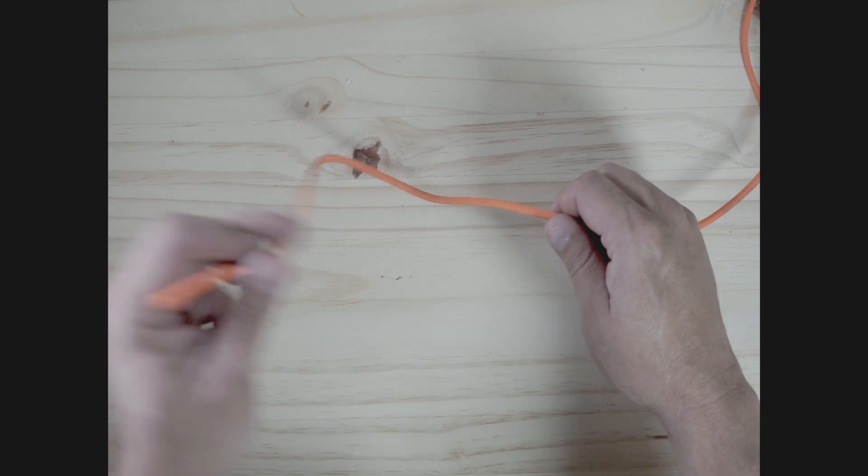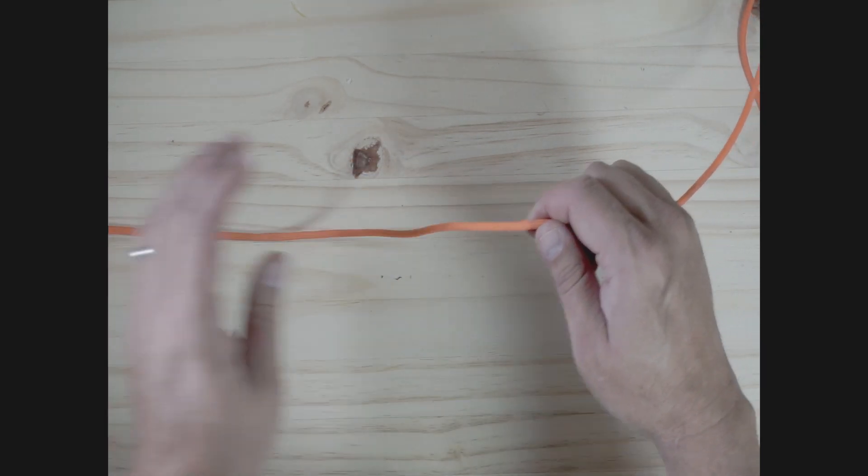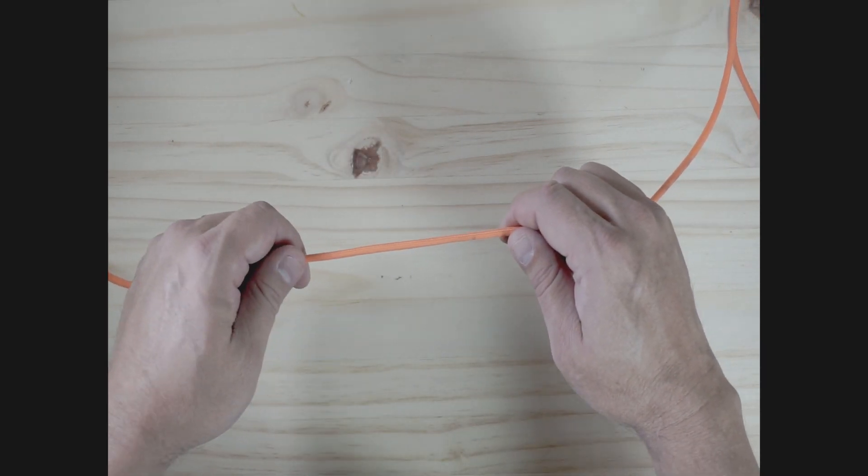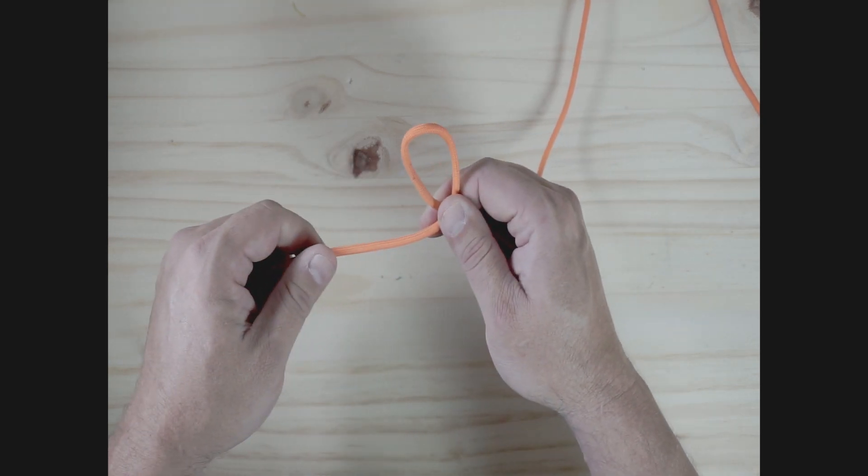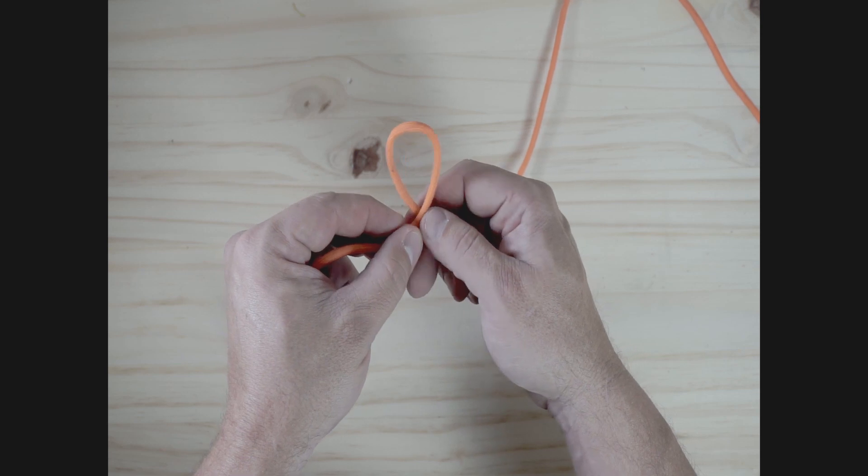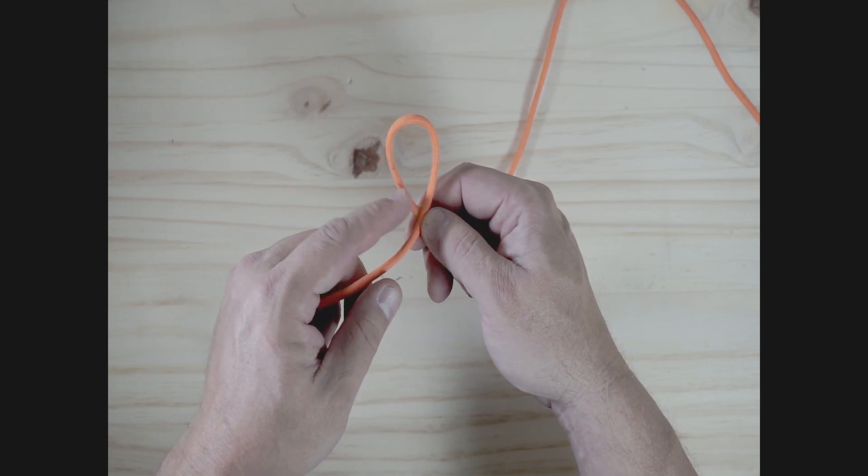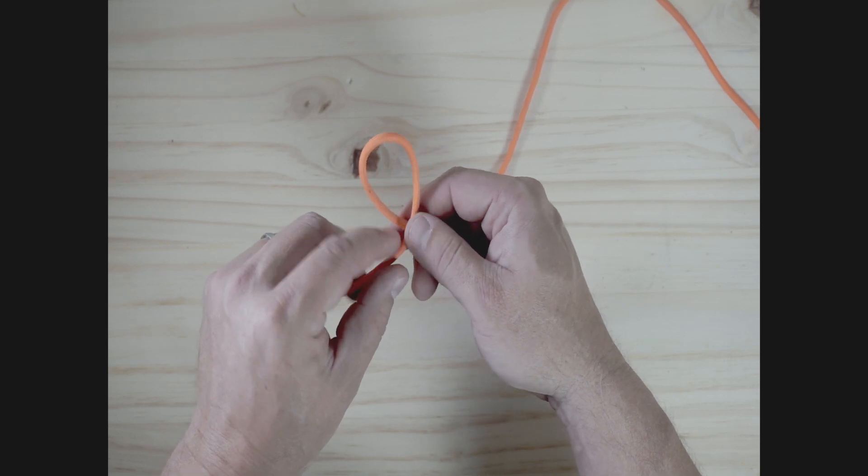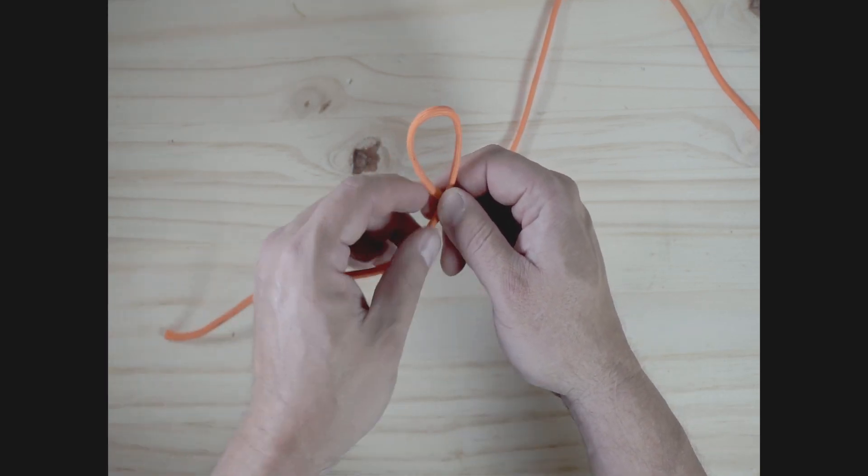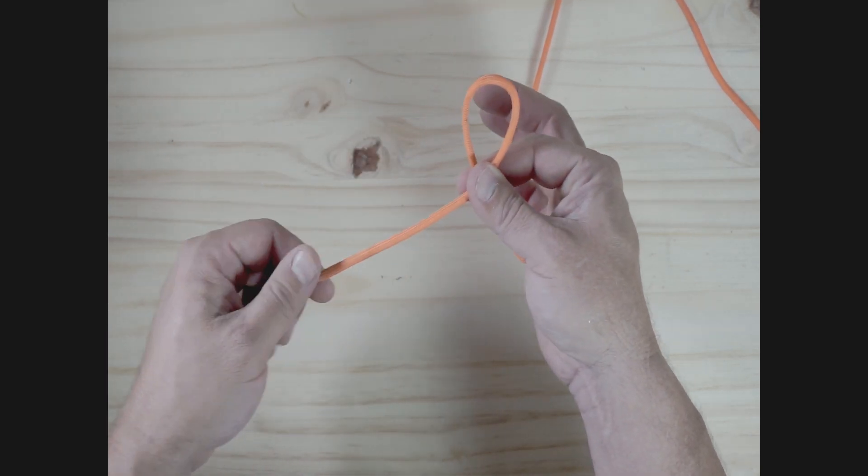Alright, so here we go. Again, tag end on my left, main line on my right. I'm going to grab my left hand, take a loop over the top, just like that. And notice I'm taking my tag end, my main line is going up and over. I end up over the main line, my tag end ends up over the main line. I'm going to hold that right there, just like that.